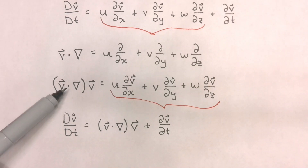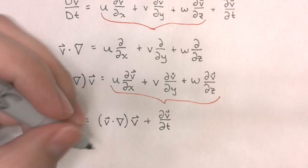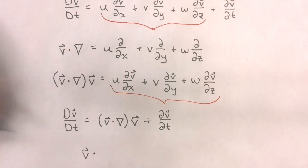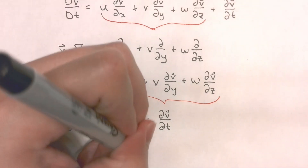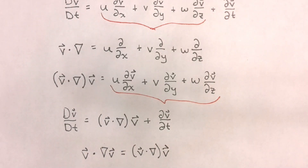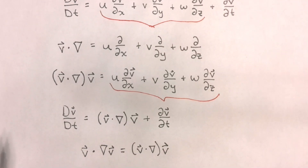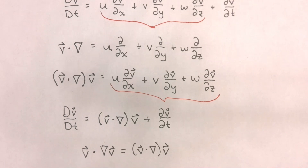The operator v dot nabla applied to v can also be expressed as v dot del v. So we can say that v dot del v is equal to v dot del applied to v. I mention this because we will see different forms of this operator throughout our derivations. Following standard vector notation, v dot del v is equivalent to v dot del applied to v.